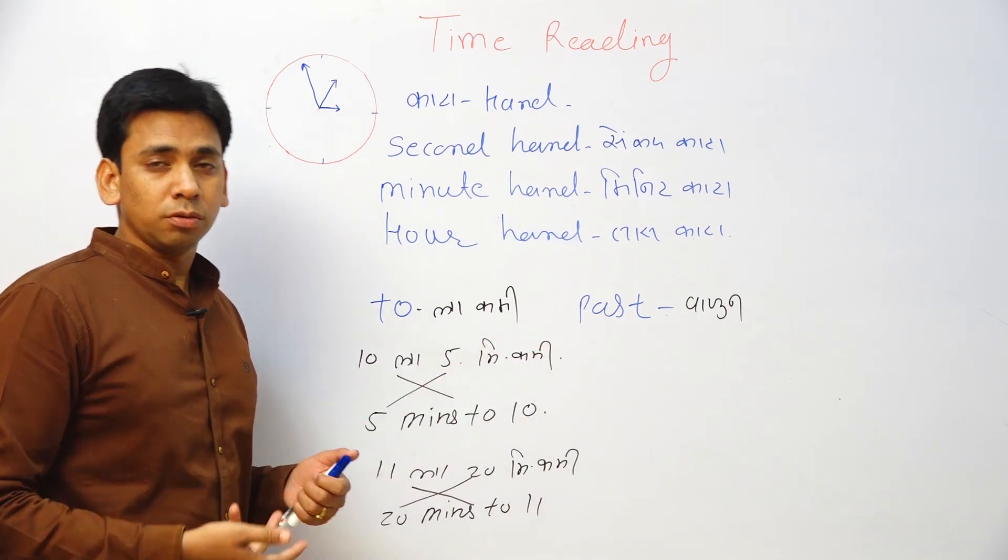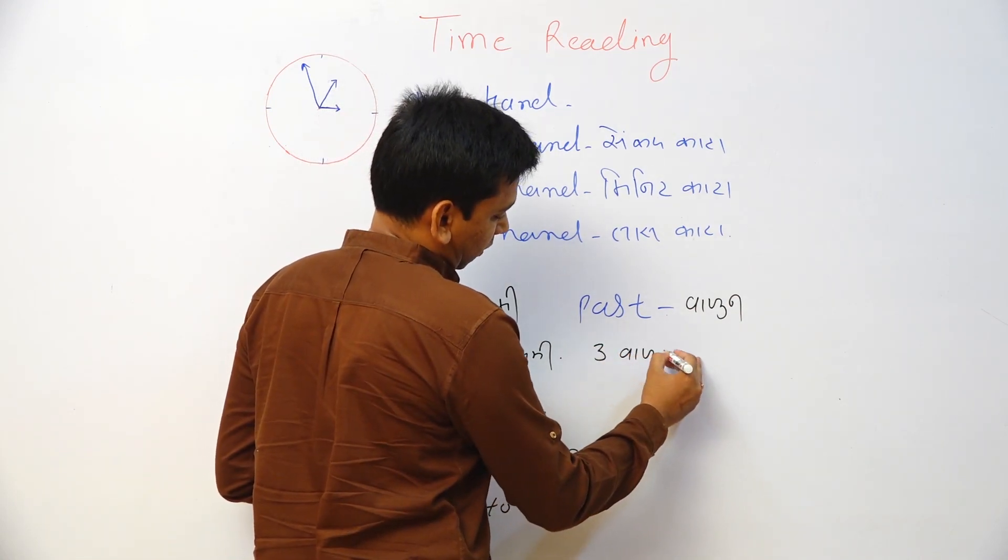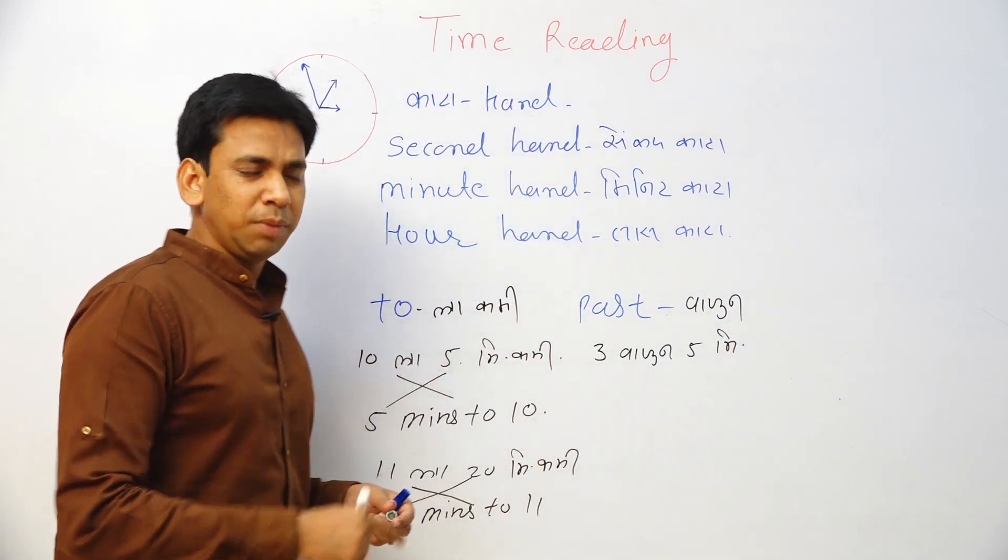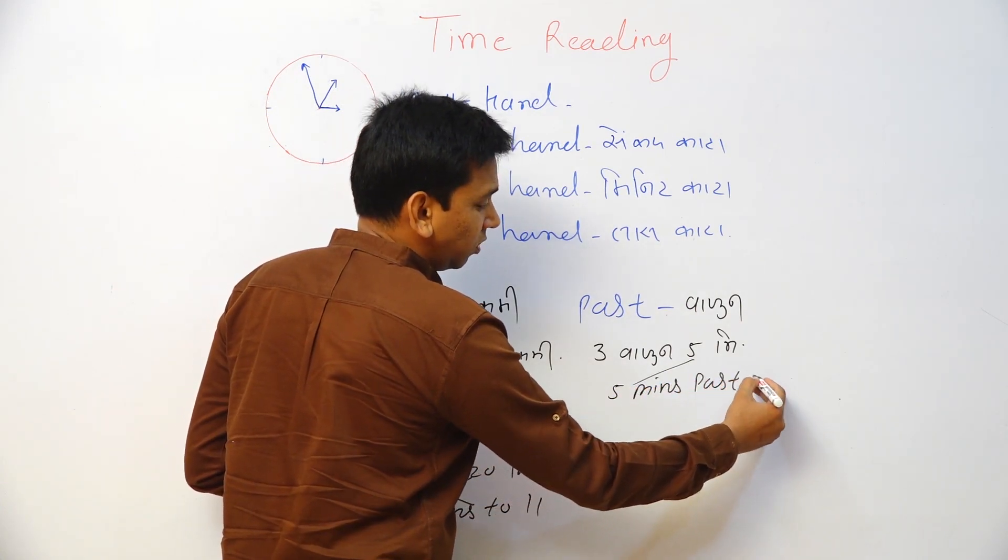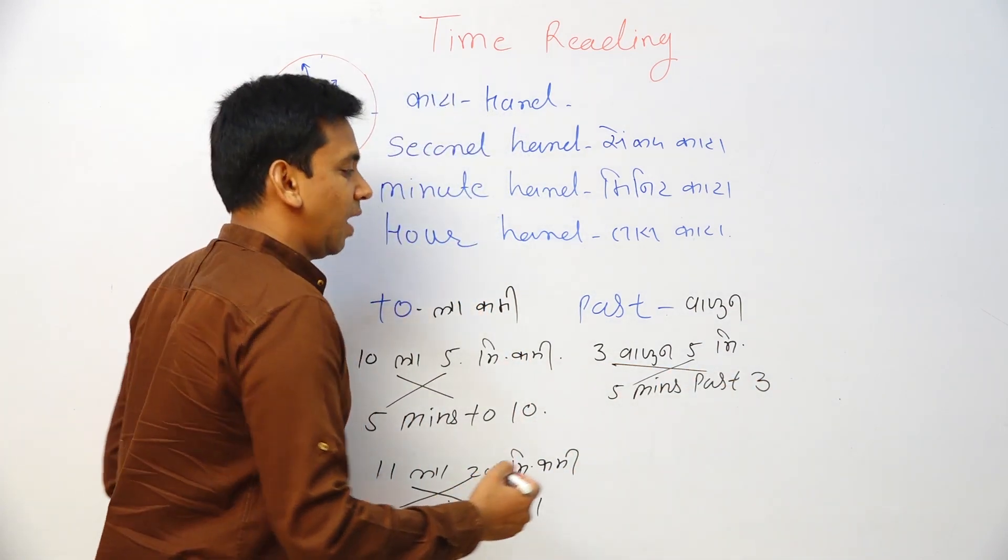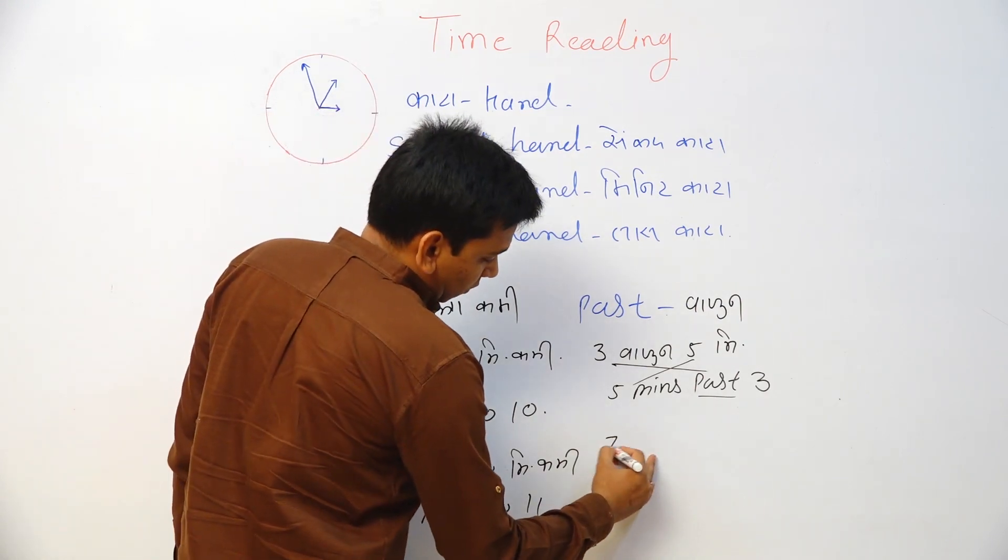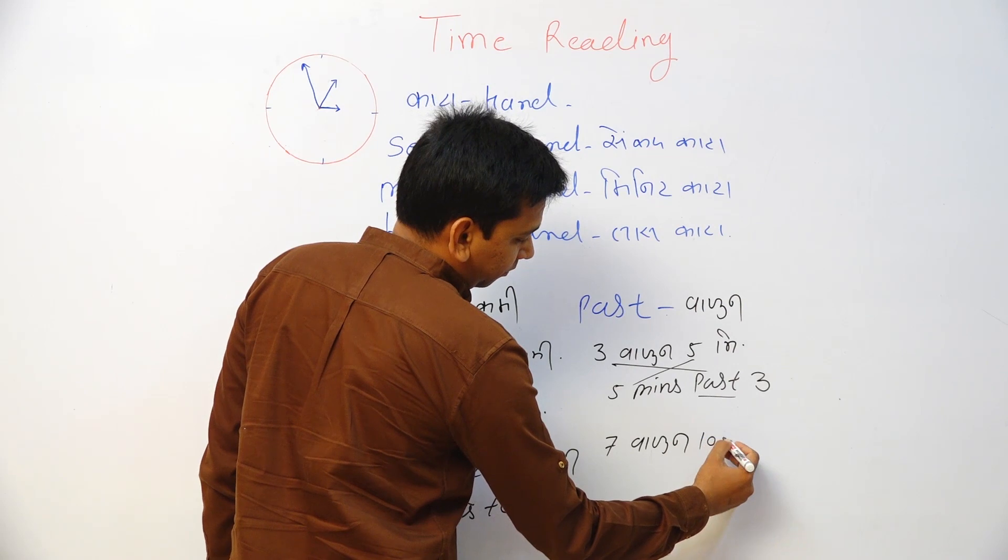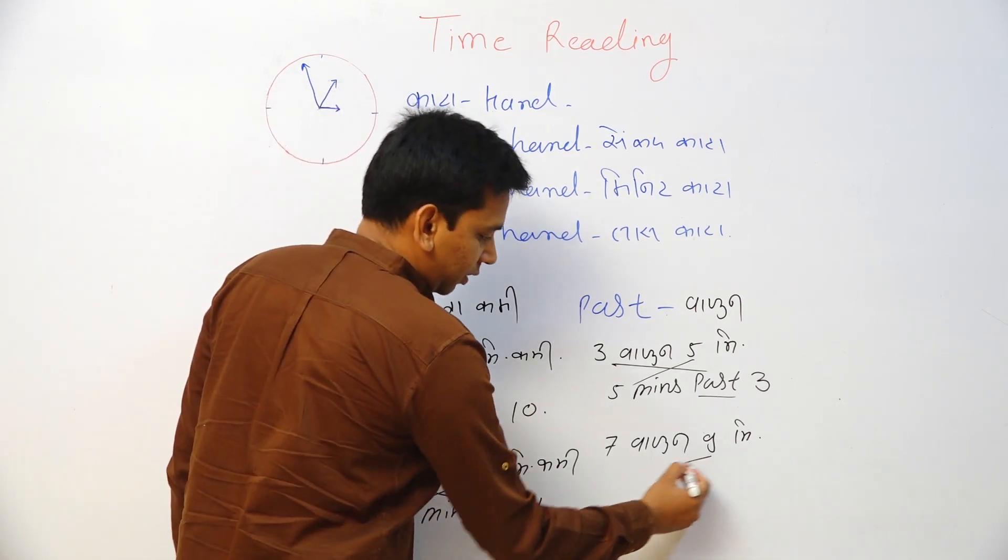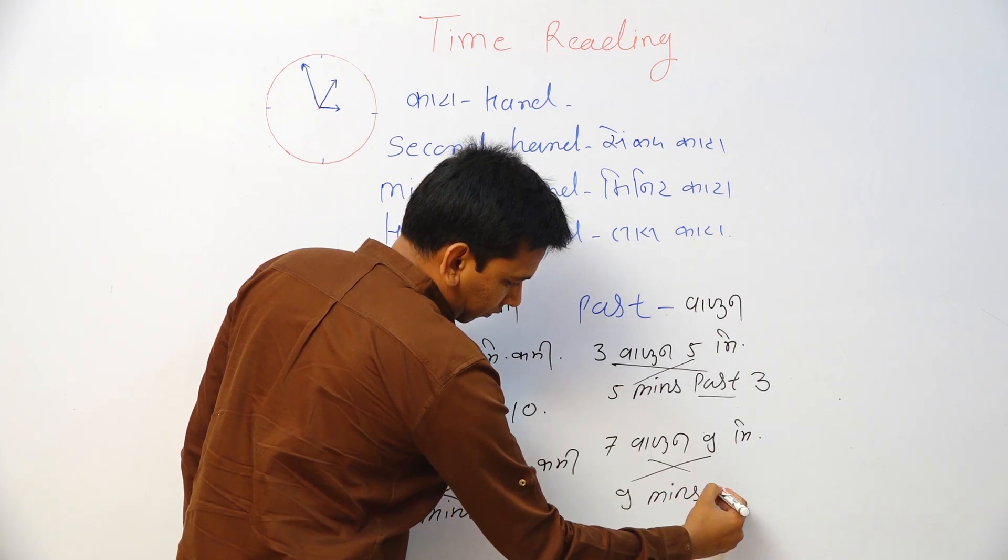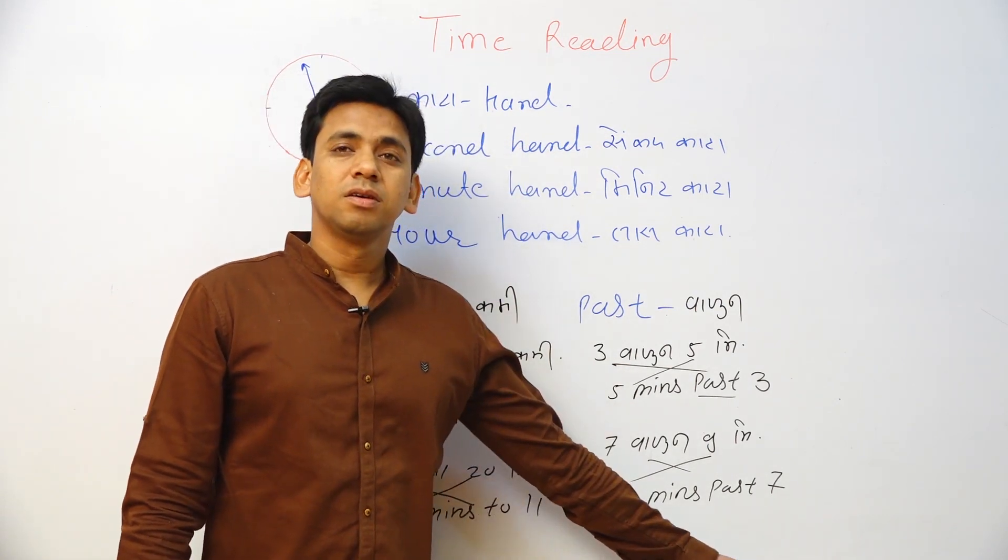Now what is 'past'? 3 o'clock past 5 minutes. Five minutes past three. 7 o'clock plus 9 minutes. Nine minutes past seven. Nine minutes past seven. Clear?